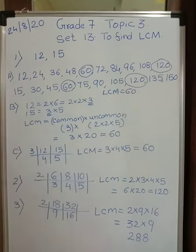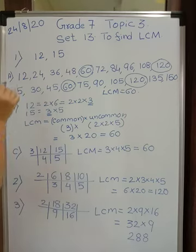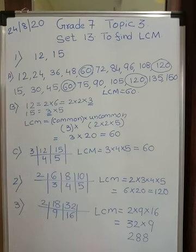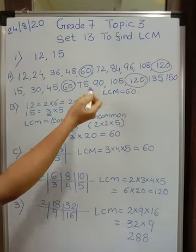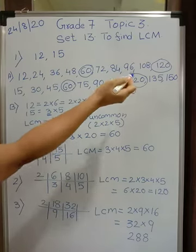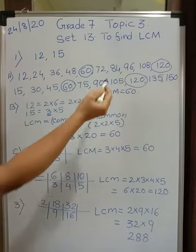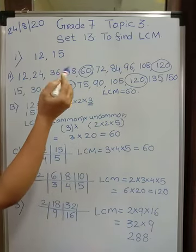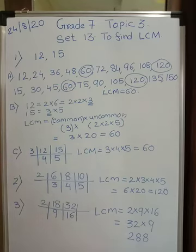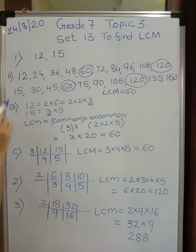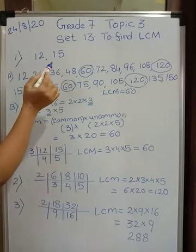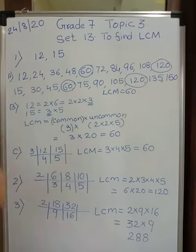It is as easy as this. But because these numbers are smaller, it is easy to write their tables. If you don't get a common multiple after writing a few numbers, you have to write the whole table. Therefore it is better to go for the next method. This method is very useful only if the numbers are very small and you know the tables well.